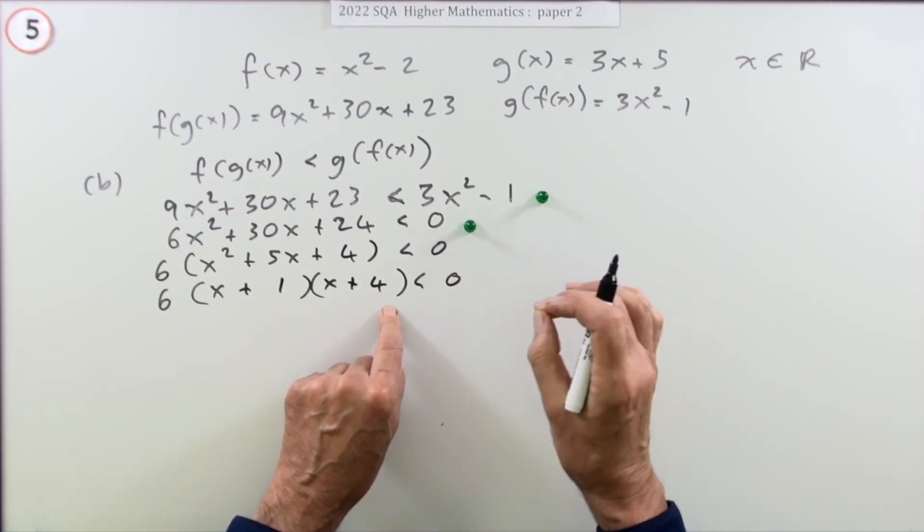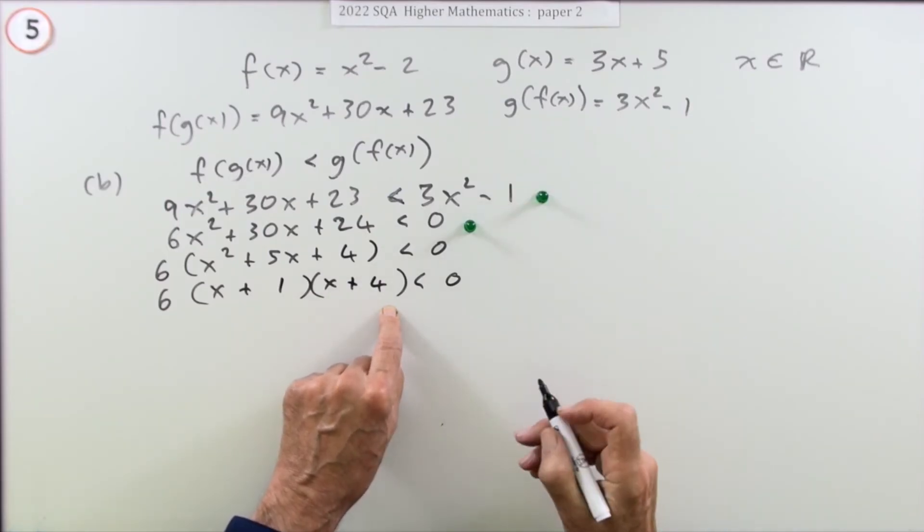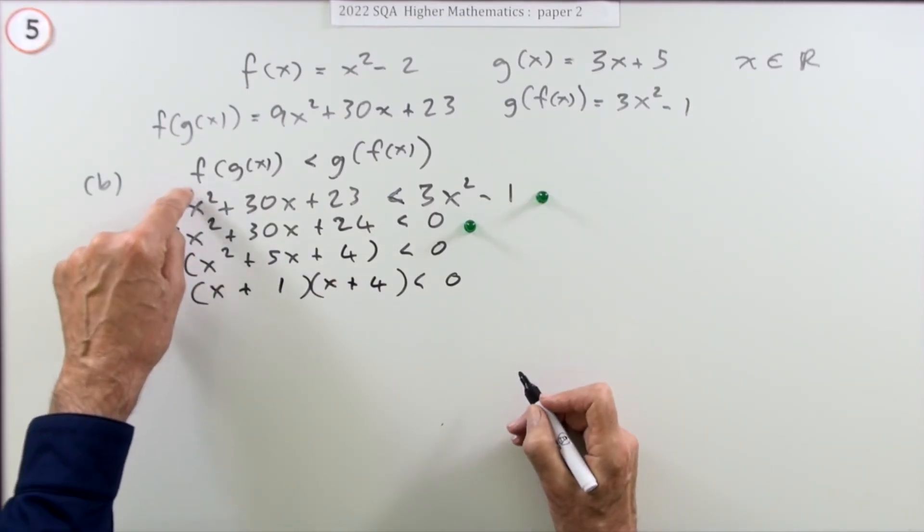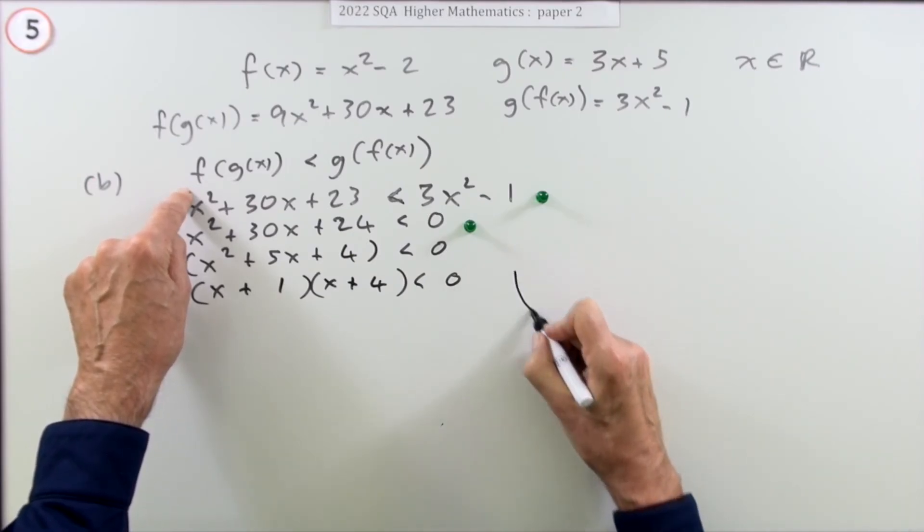The way to deal with this is to think of a picture of the answers. Draw a sketch of the graph - it'll show when the answers are positive or negative. You've got a positive x squared quadratic, the correct way around.